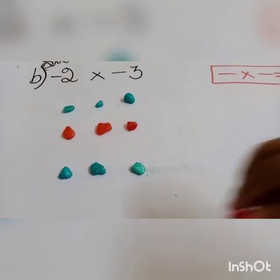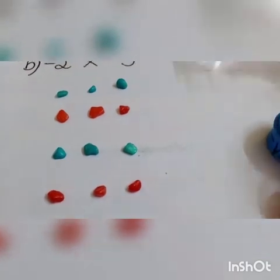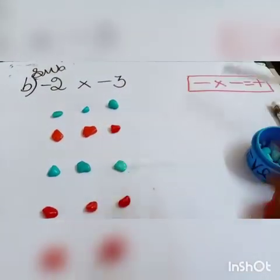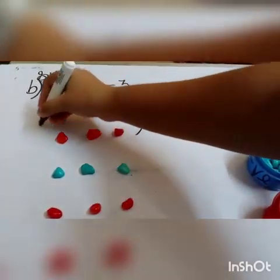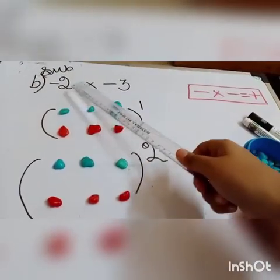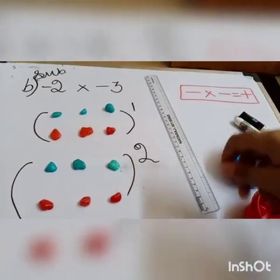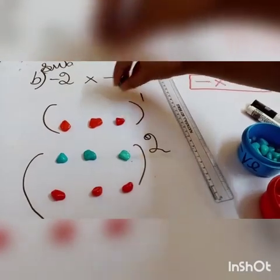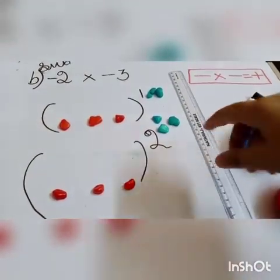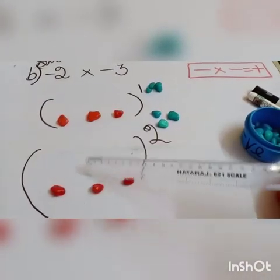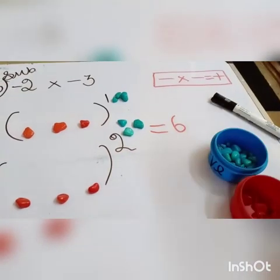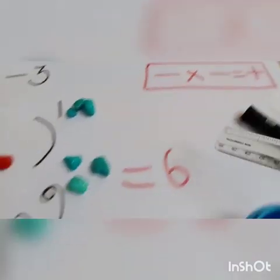Subtract 3 negative and 3 positive. Now, again, we will go to the question — subtract 2 groups of minus 3. From this, we are going to take away minus 3: 1 group of minus 3, 2 groups of minus 3. So now the remaining are in positive. When we total the positive stones, we will get the answer as 6. It is positive because minus into minus is equal to plus, so the answer will be in positive.